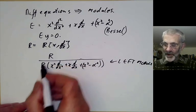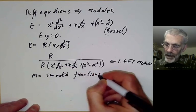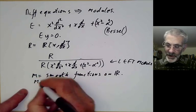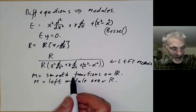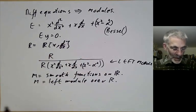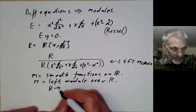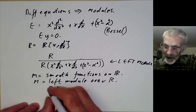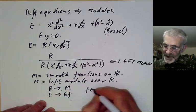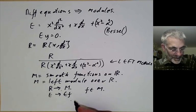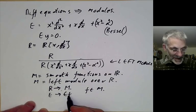If we let M be the smooth functions on the real line, then M is also a module over the ring R because you can apply a differential operator to a smooth function. Let's think what a solution to this differential equation is. We can define a map from R to M by taking any element E to E(f) where f is some function in M.